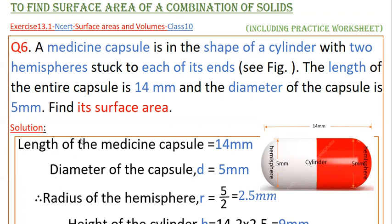So the diameter is 5 mm and the total length is 14 mm. The radius of the hemisphere is equal to diameter by 2, that is 5 by 2, which equals 2.5 mm.